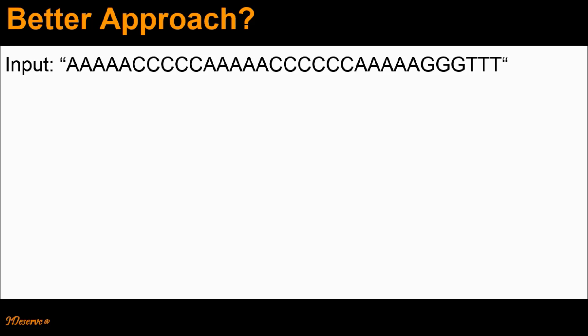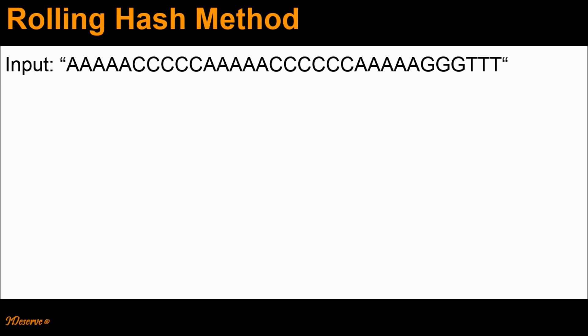Now let's try to come up with a better approach in terms of time complexity. We will be making use of the rolling hash method. In this method, we assign value 1 to A, 2 to C, 3 to G, and 4 to T. Using these assigned values, we compute the hash value for every valid 10-letter sequence. Note that we will not be making use of any library function to compute these hash values — instead, we will be computing these values in the program itself.